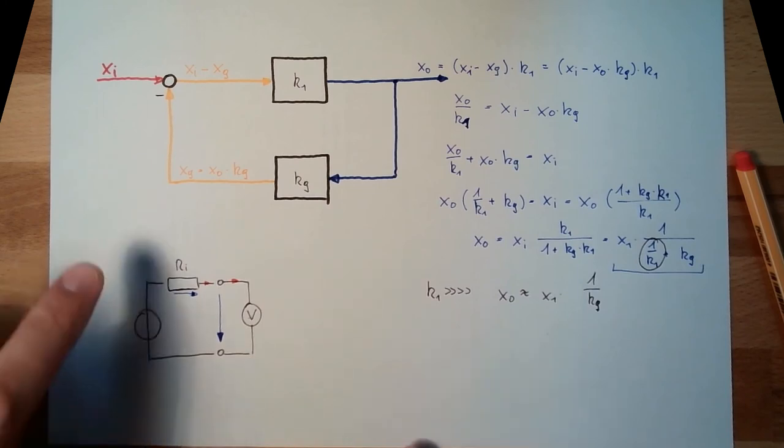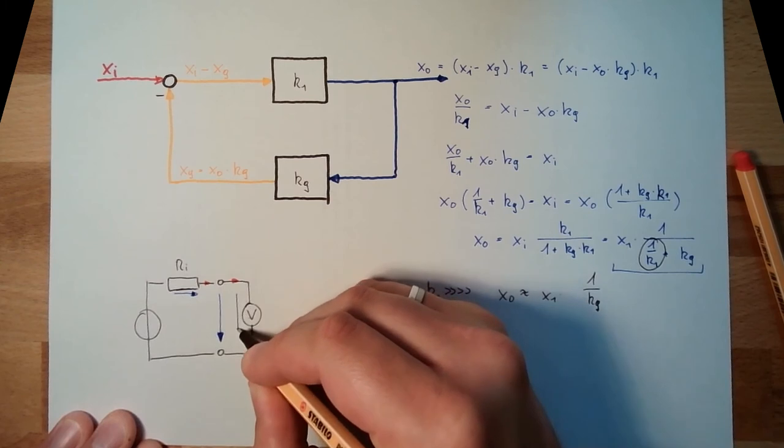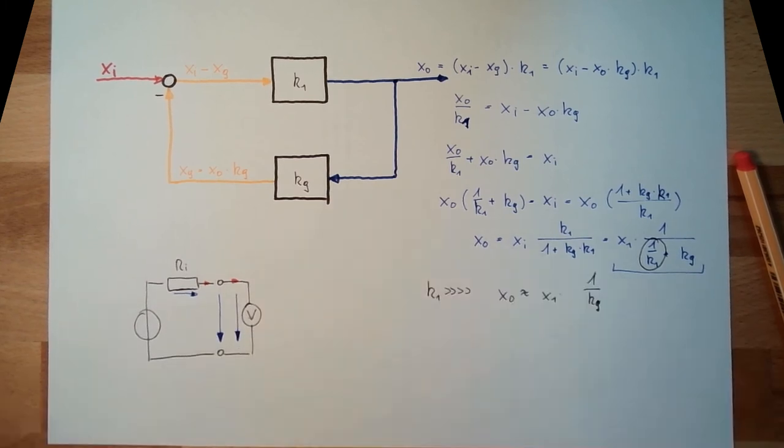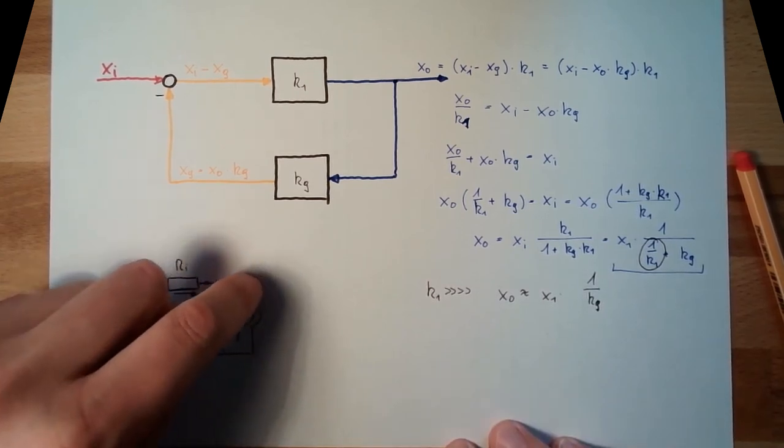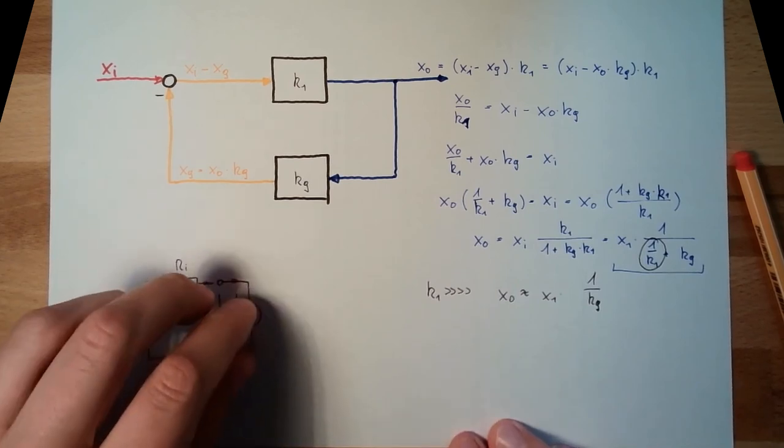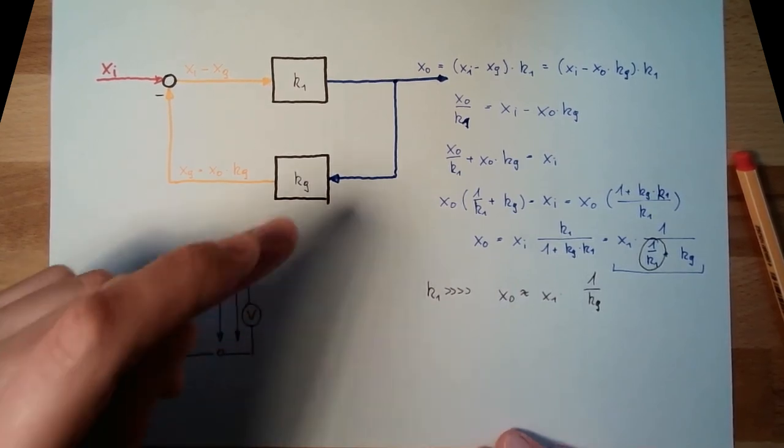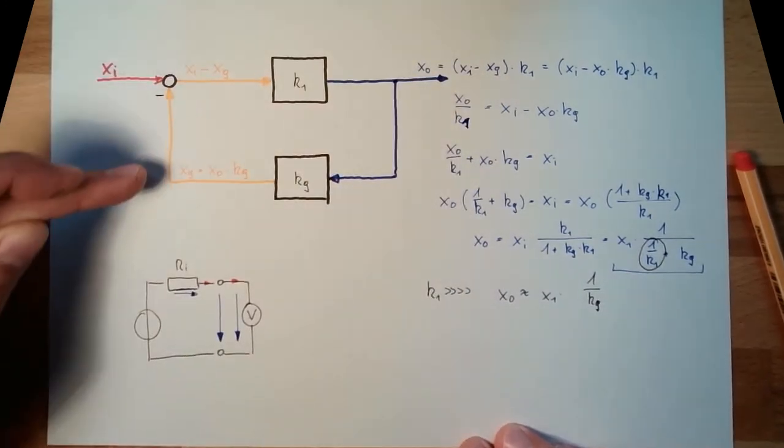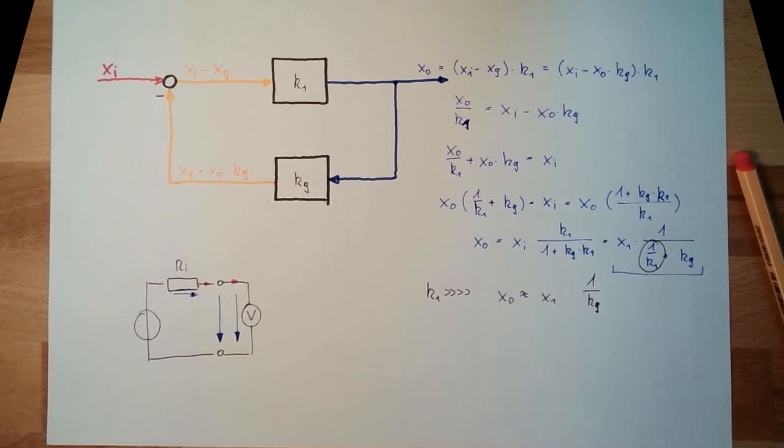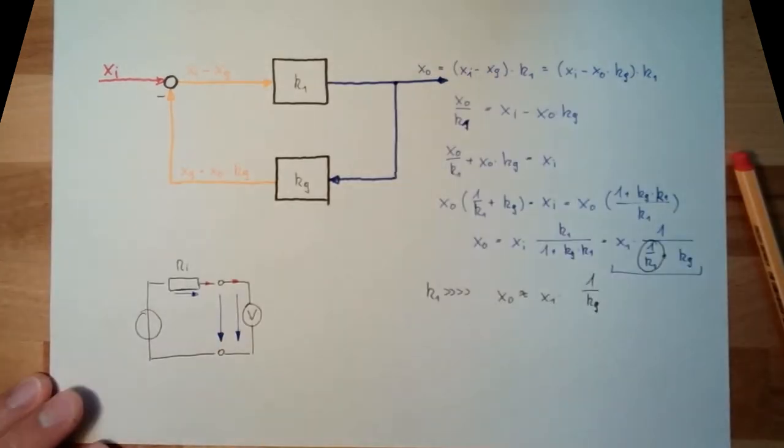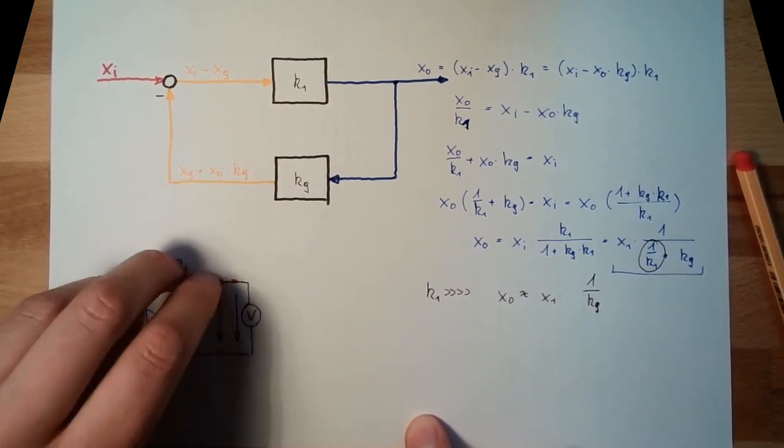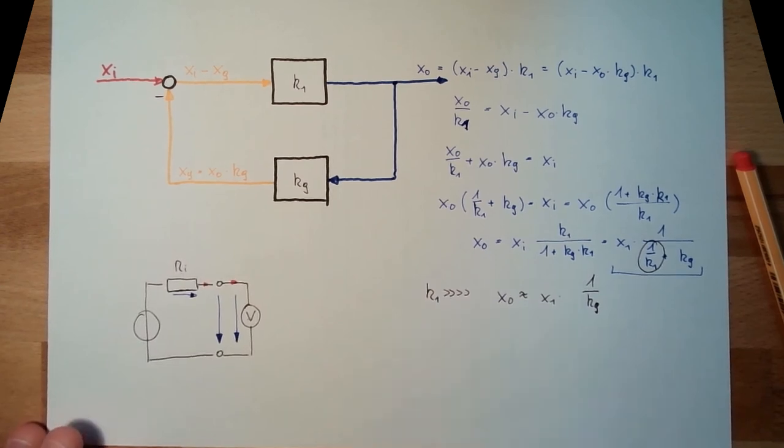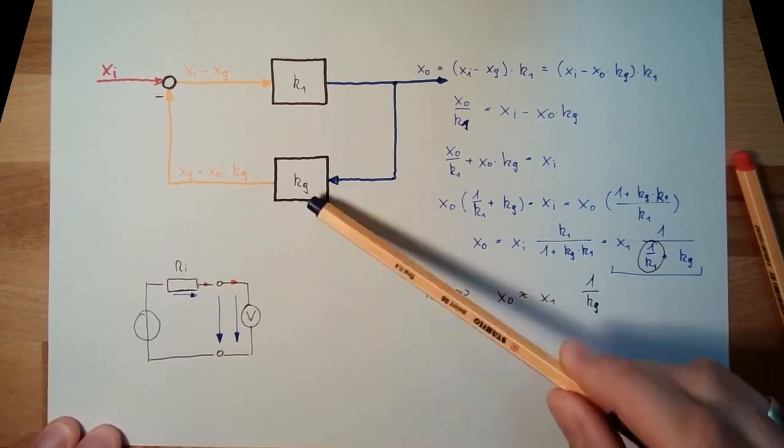However, if I use this and I produce here internally a voltage which is about the same value like this one, there is no current running. If I have here a separate voltage generator inside because of my compared unit, my compare value, then this current here is almost zero. I'm not draining energy from a measured object. This is the big advantage of the circle structures here.